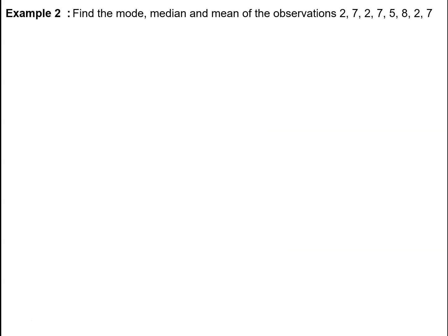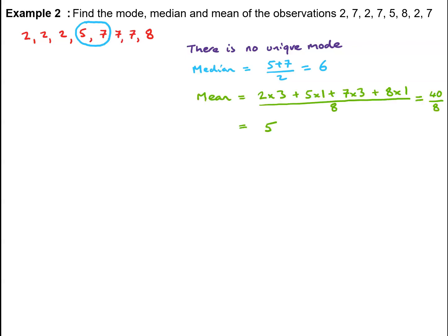In a similar way, if we want to find the mode, median, and mean of the observations 2, 7, 2, 7, 5, 8, 2, 7, we'll notice that there isn't a mode because there isn't a single observation with the highest frequency. In this case, we've got eight observations, so the median will be the average of the fourth and fifth observations, which is the average of 5 and 7, giving us 6. The mean is 3×2 + 5 + 3×7 + 8, which equals 40 divided by 8, giving us a mean of 5.